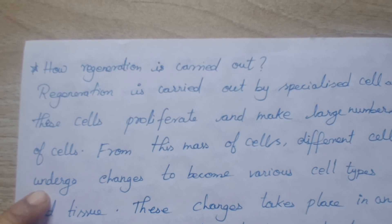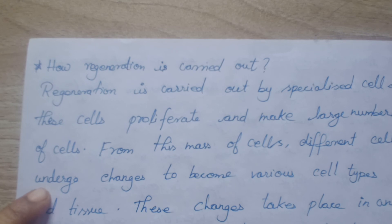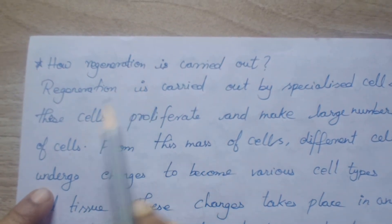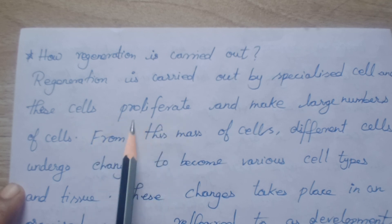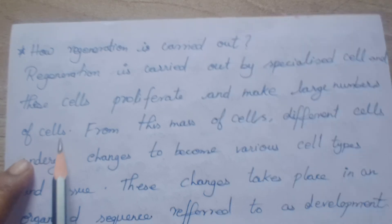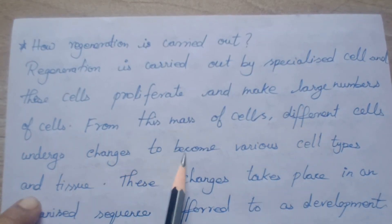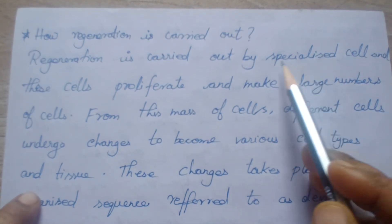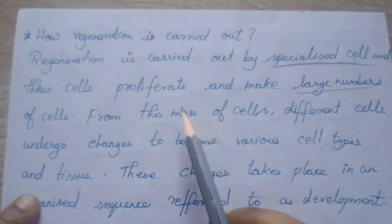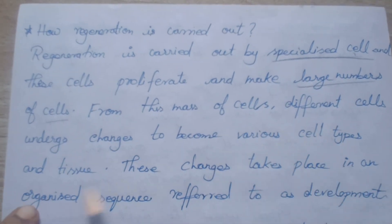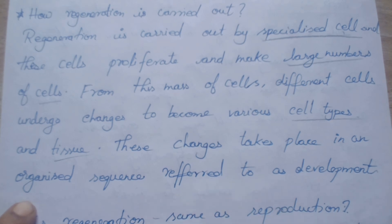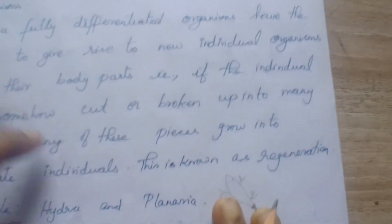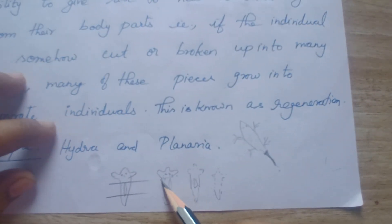How is regeneration carried out? Just as a specialized cell is able to produce new other types of cells, regeneration is carried out by specialized cells. These cells proliferate and make a large number of cells. From this mass of cells, different cells undergo changes to become various cell types and tissues. This specialized cell makes a large number of cells, undergoes changes, and forms various new types of cells and tissues. These changes take place in an organized sequence referred to as development.